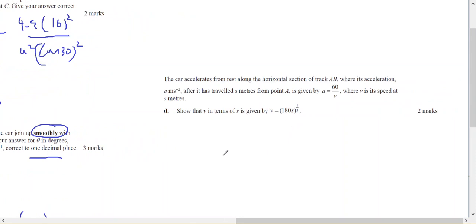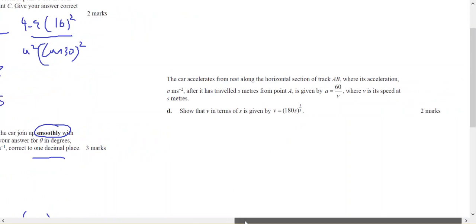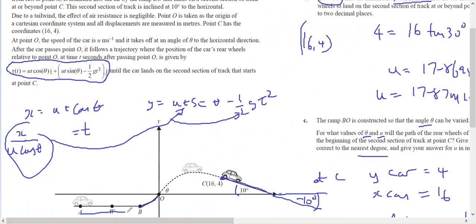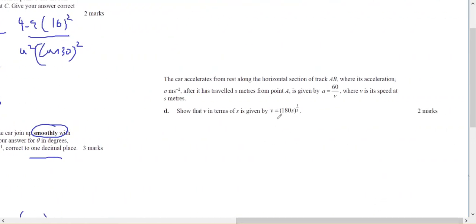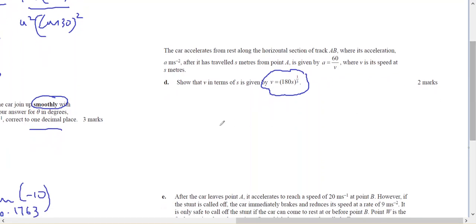So in part d, this is moving along here. And I want to find that the velocity, where acceleration equals 180, so I'm going to replace a with v dv dx.